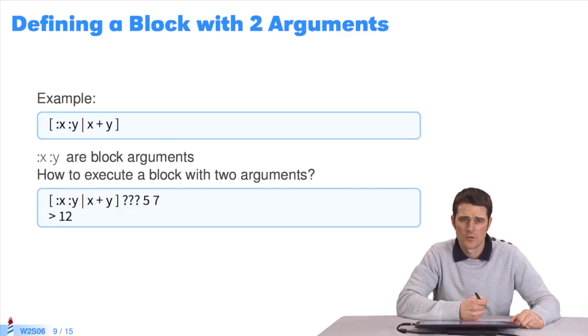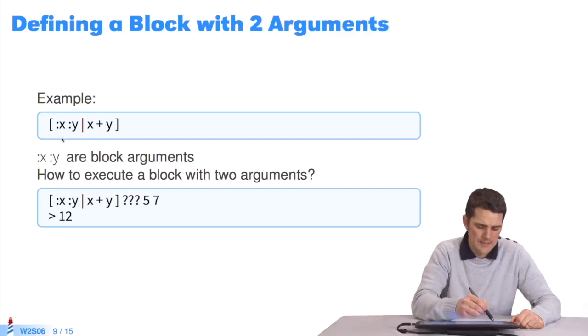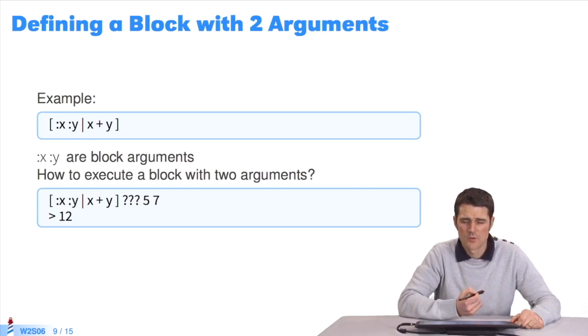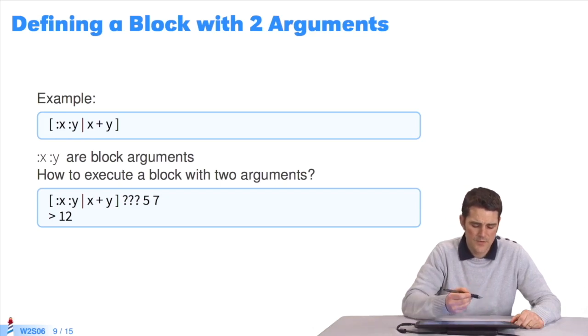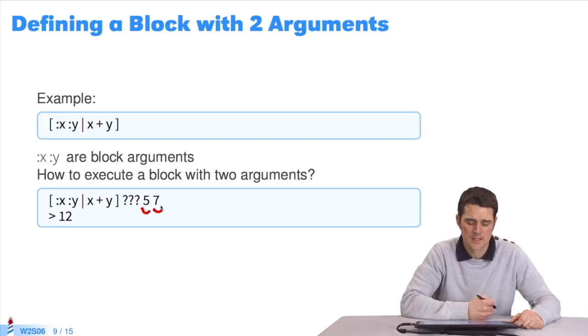You can also define blocks with several arguments. For instance, x and y. This block has two arguments. But how would you evaluate this block? Since you need to pass two values to trigger its evaluation, 5 and 7, which would replace x and y.